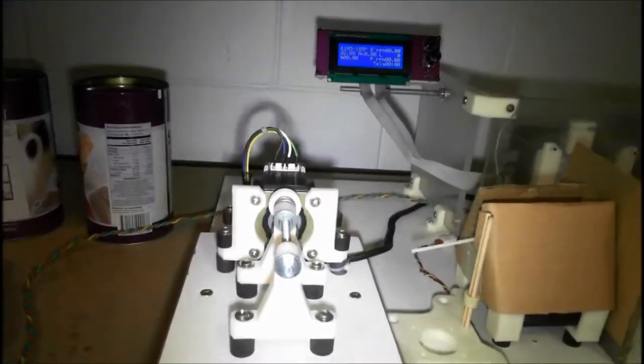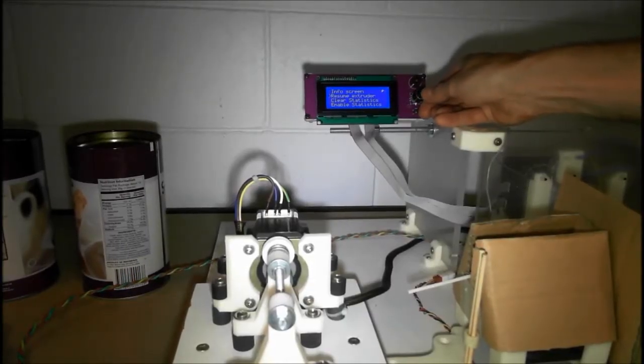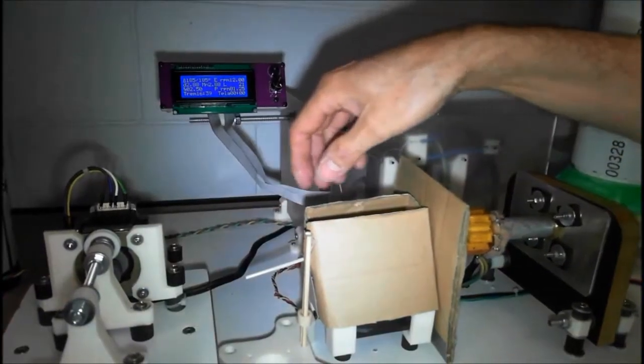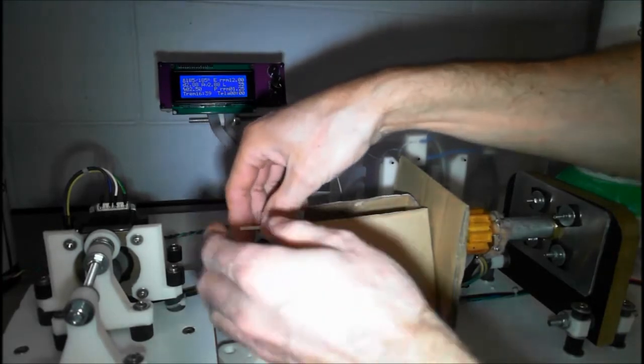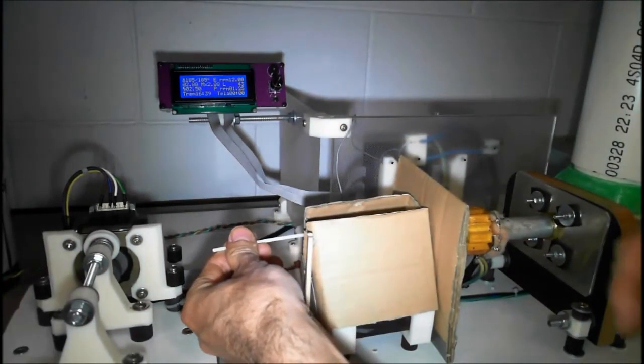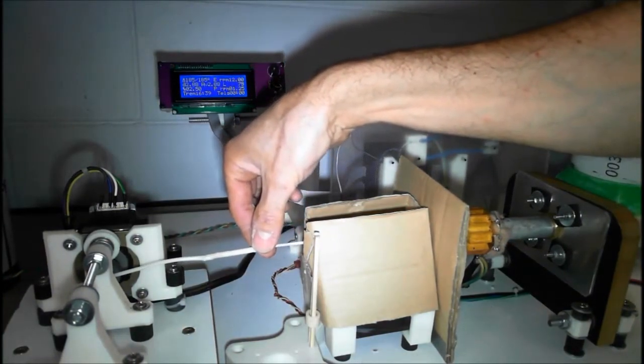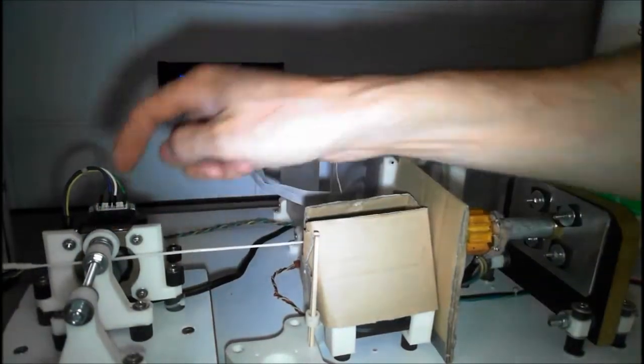So then come back to your screen and then say resume extruder, so that it'll actually start the motors. Then it'll actually start pushing the plastic out of this nozzle. And what you can do is just gently pull it. Don't pull it too fast because it'll get really thin.